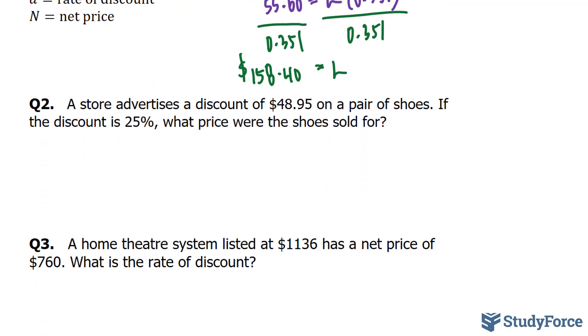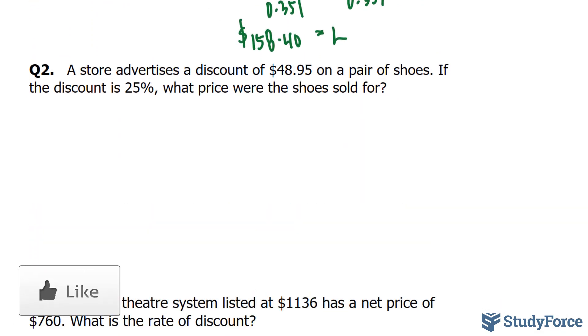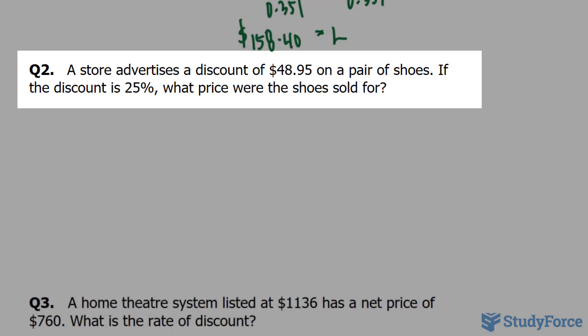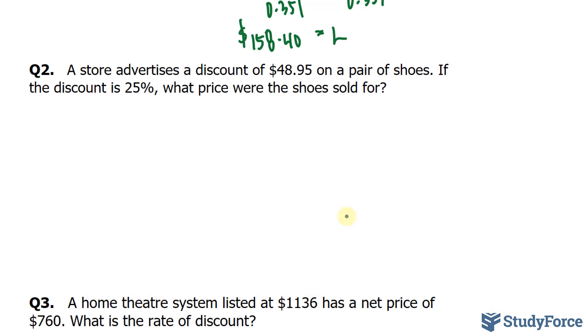Let's move on to question two. This time, the question asks, a store advertises a discount of $48.95 on a pair of shoes. If the discount is 25%, what price were the shoes sold for? Before we answer this question, I want to introduce another formula used in financial math.